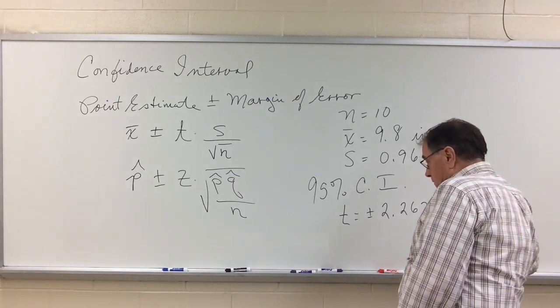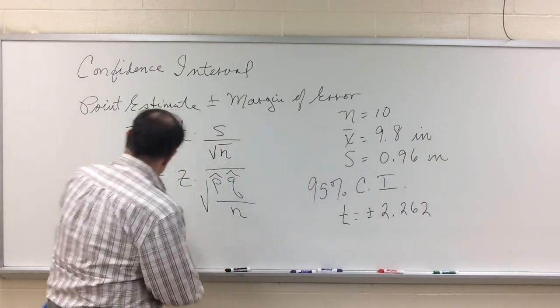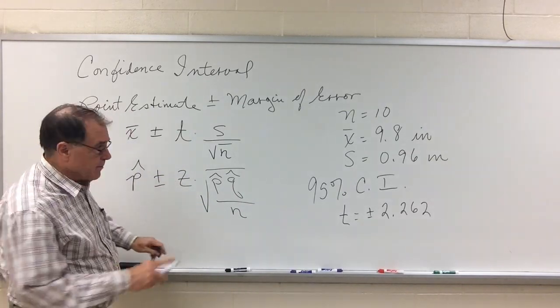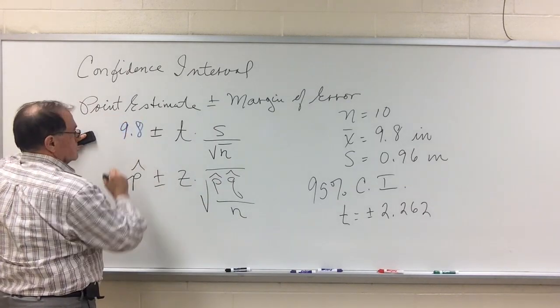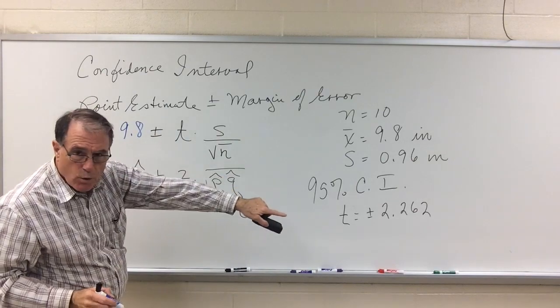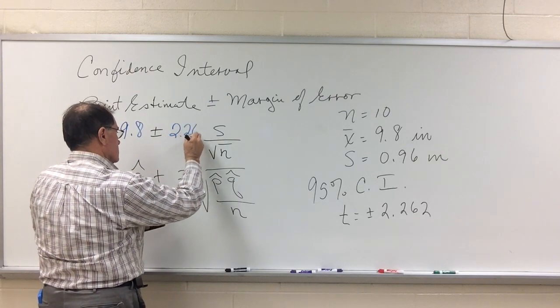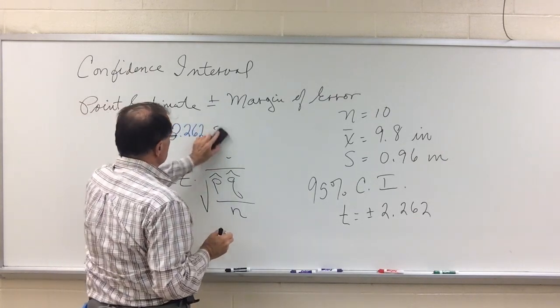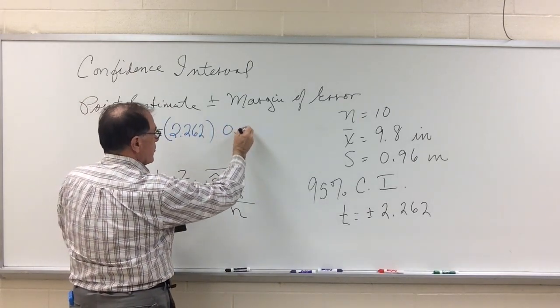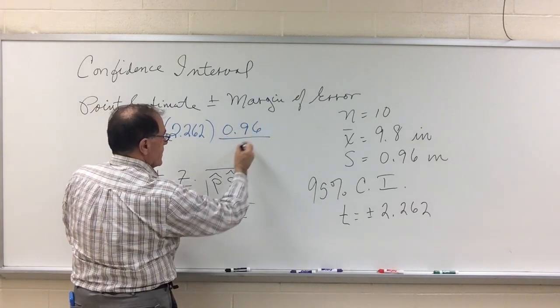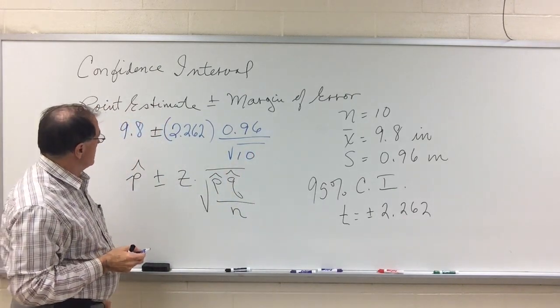So my t-score is plus or minus 2.262. So now I'm able to construct my confidence interval. So my confidence interval, come over here to my formula. The point estimate is the sample mean, which is 9.8 inches. My t-score, 2.262 inches. My sample standard deviation, 0.96, and the square root of the sample size is then the square root of 10.